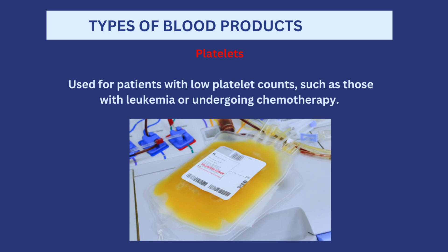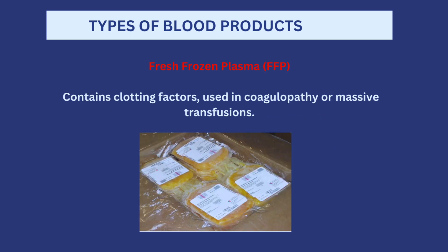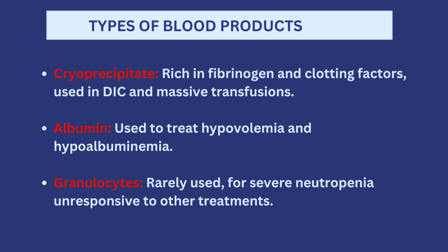Platelets are used for patients with low platelet count, such as those with leukemia or those undergoing chemotherapy. Fresh frozen plasma contains clotting factors and is used in coagulopathy or after massive blood transfusion. Cryoprecipitate is rich in fibrinogen and clotting factors, used in disseminated intravascular coagulation and massive transfusion. Albumin is used to treat hypovolemia and hypoalbuminemia. Granulocytes are rarely used but may be transfused when a patient has neutropenia unresponsive to other treatments.